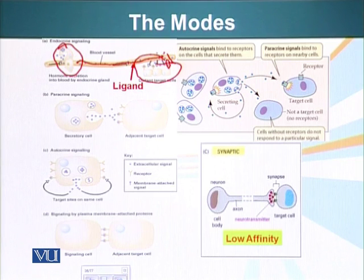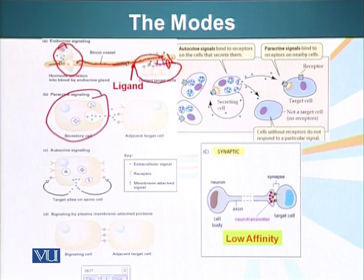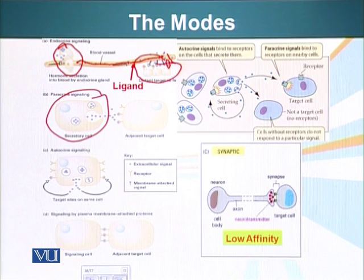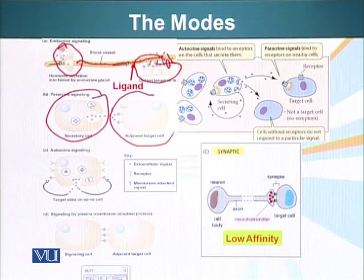There's paracrine signaling, in which a cell secretes a ligand and a cell in the near vicinity — not an adjacent cell, but somewhere nearby — is going to receive the signal through diffusion. So here's a cell secreting this ligand, and here's a target cell in the close neighborhood that will receive the signal and respond.